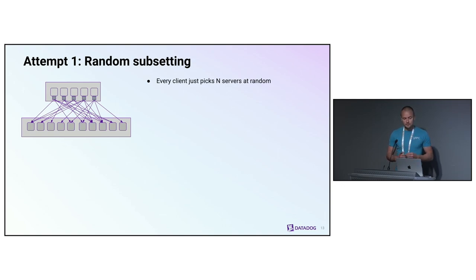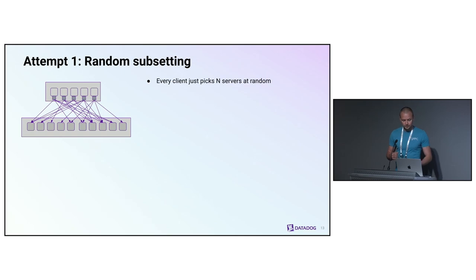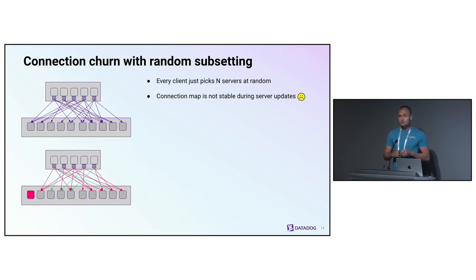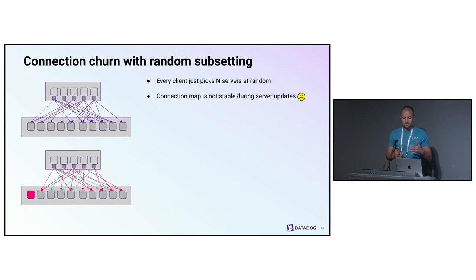One way to implement subsetting, which is the obvious one, is fully random subsetting — every client just picks N random servers out of the list of available servers. One problem with this is that it can lead to high connection churn during server changes. Imagine what happens if a server gets deleted, as illustrated on this diagram. At that point every client recalculates its subset, and the probability that it picks exactly the same subset is very low. In red I marked all new connections, in green connections that are preserved — and as you can see, most connections are completely replaced, which is something we want to avoid.